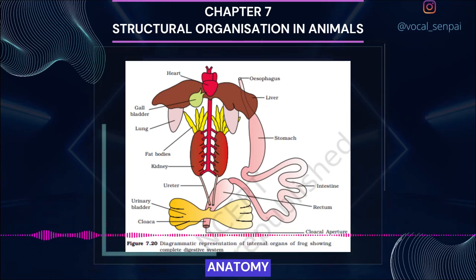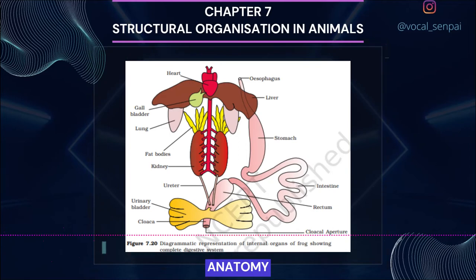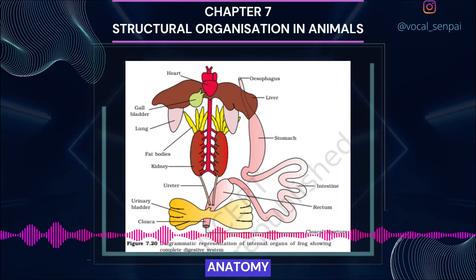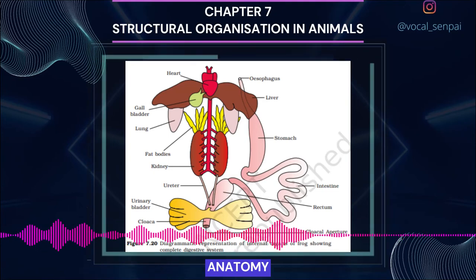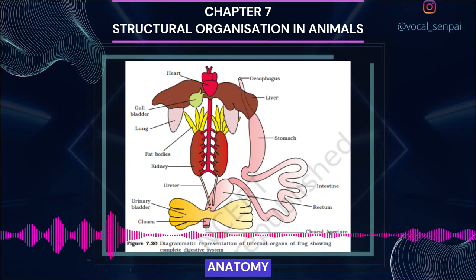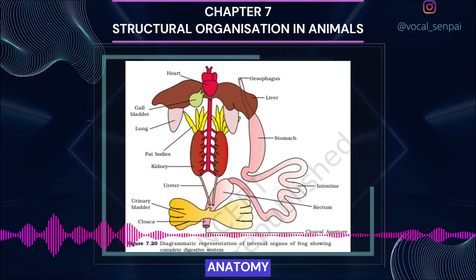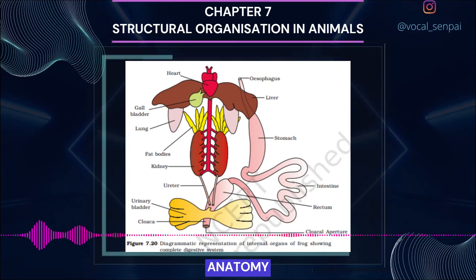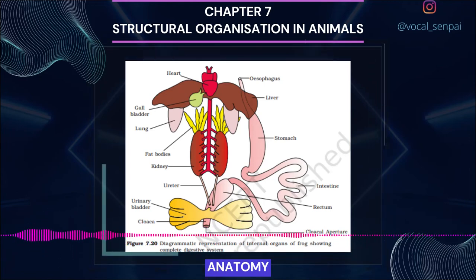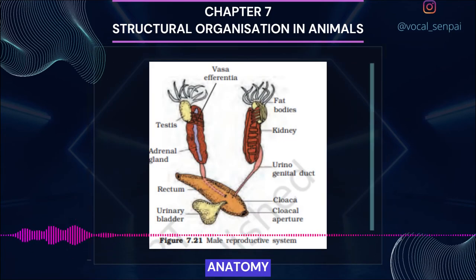Frogs respire on land and in water by two different methods. In water, the skin acts as an aquatic respiratory organ (cutaneous respiration); dissolved oxygen in water is exchanged through the skin by diffusion. On land, the buccal cavity, skin and lungs act as respiratory organs; respiration by lungs is called pulmonary respiration. The lungs are a pair of elongated, pink-colored sac-like structures present in the thorax. Air enters through the nostrils into the buccal cavity and then to the lungs. During estivation and hibernation, gaseous exchange takes place through the skin. The vascular system of frog is well-developed and of closed type; frogs also have a lymphatic system. The blood vascular system involves heart, blood vessels and blood; the lymphatic system consists of lymph, lymph channels and lymph nodes.